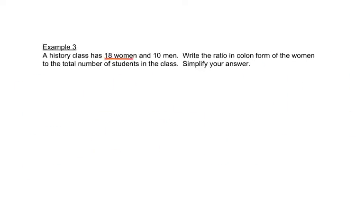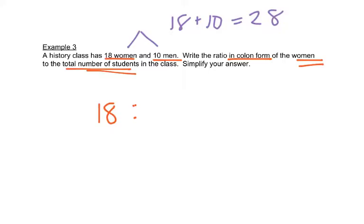A history class has 18 women and 10 men. Write the ratio in colon form of the women to the total number of students. So we have 18 women, so that's going to be our first number. And then it says in colon form, so we'll have a colon. And then it wants for our second number, the total number of students. Well, we're not given that specifically in this problem, but we know we have 18 women and 10 men. So that tells us we have 28 total students.